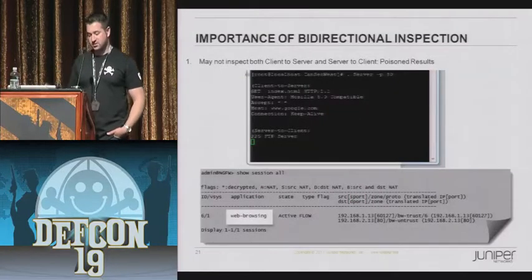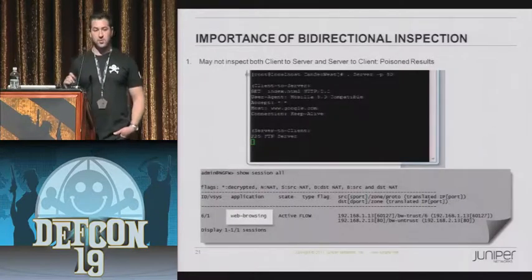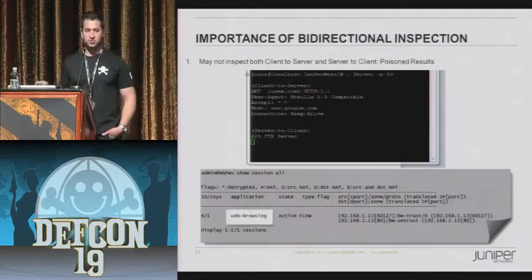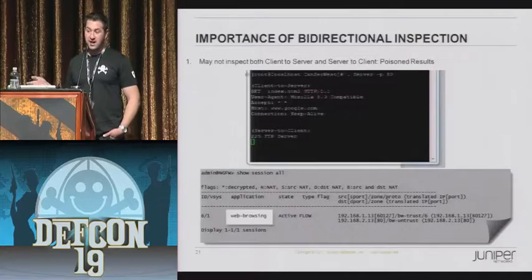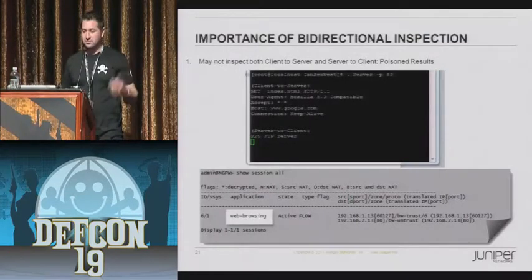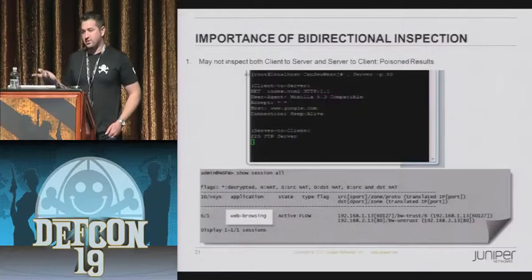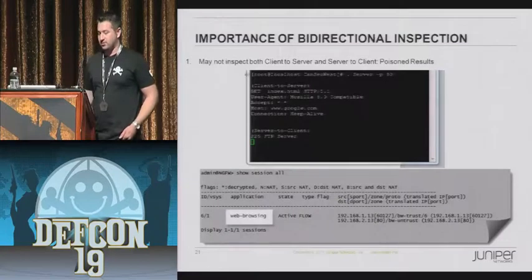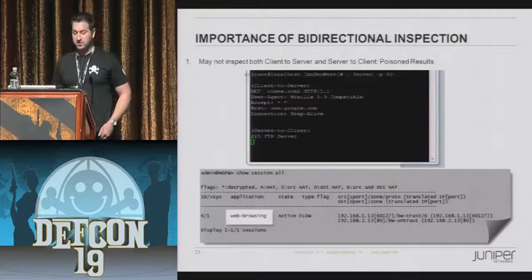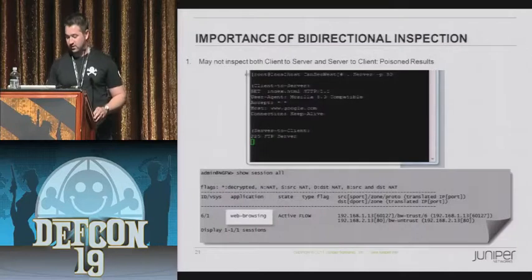In this example, what I did was send a GET request to an FTP server. Not all applications - if you're only looking at the client to server - FTP, SMTP, and other applications may not close down that connection. So if you sent a GET, the FTP server is going to say it doesn't know that bad message. But if all the network application firewall did was look at the client-to-server direction, it would say it's HTTP. Then they could just do an FTP file transfer right after without any issues. So if you're not looking at things bidirectionally, that can certainly create an issue for you.